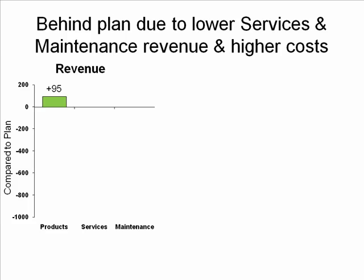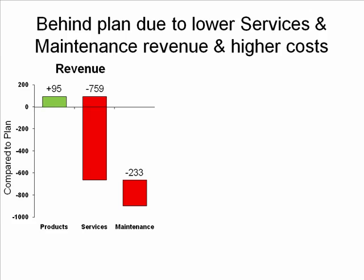The problem is the next two areas. Our services revenue brings us down a long way — we're well behind on the services revenue plan — and maintenance makes that even further an issue. In total on the revenue side, we are behind plan by almost nine hundred thousand dollars. That is a huge gap and we're going to have to address that. We'll talk later in the presentation about the specific initiatives we have to try to reverse that trend.